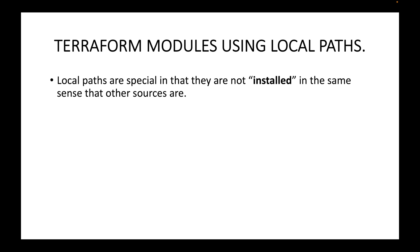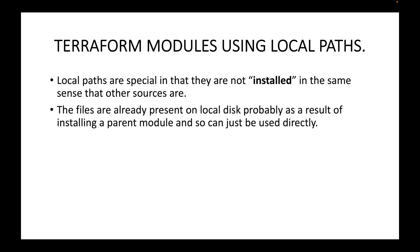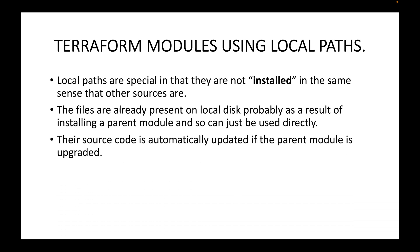Local paths are special in that they are not installed in the same sense as other sources. The files are already present on your local disk — probably as a result of installing a parent module — so they can be used directly. When using a local path, Terraform will not download any source code because the code is already available on the local disk. Additionally, the source code is automatically updated if the parent module is upgraded.